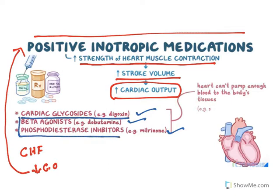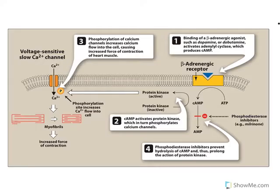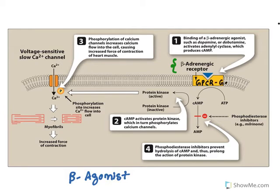To understand how beta agonists act, we need to understand where they act and what receptors are affected. The beta adrenergic receptor is a type of G protein-coupled receptor — specifically the Gs type. When the beta receptor is activated by binding of an agonist, it activates the adenylyl cyclase enzyme.